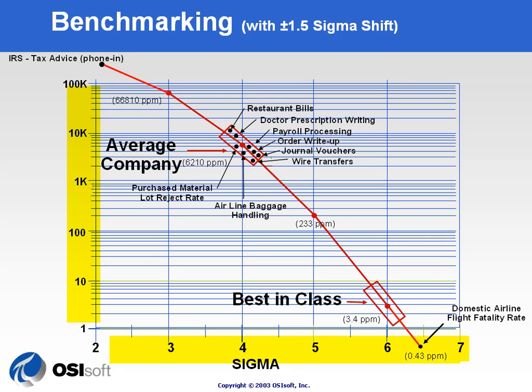Airline baggage handling — as we all know, we sometimes have trouble with luggage when traveling — is a well-known example. Best-in-class companies will be around 6 sigma. Domestic airline flight fault rates are even better than that, because we really cannot afford planes crashing on a daily basis. This next example shows how the Six Sigma concept relates to real-life cases.